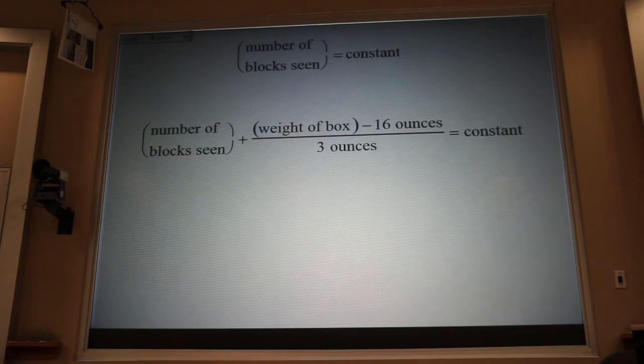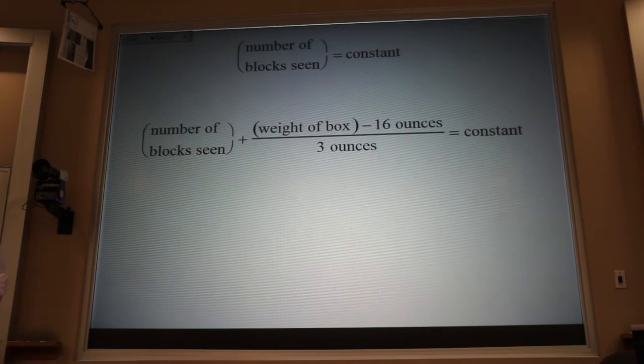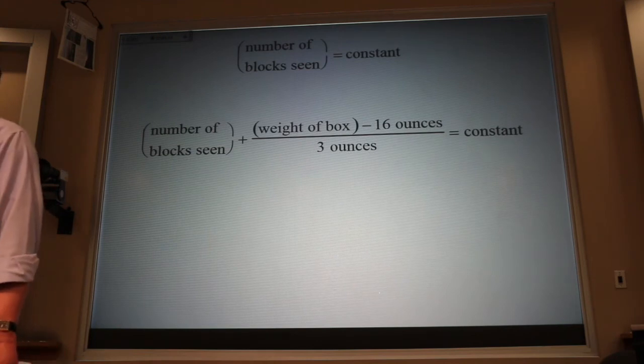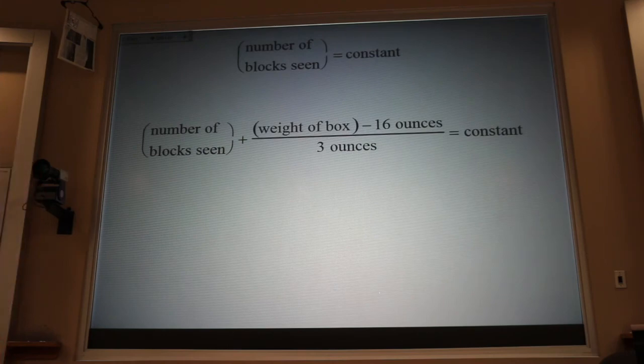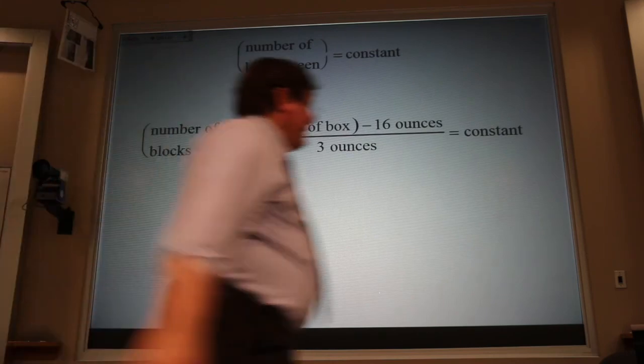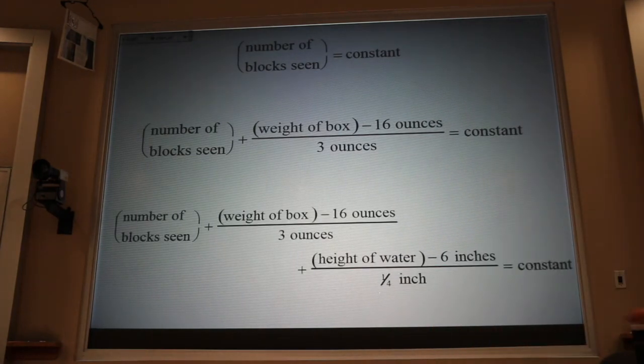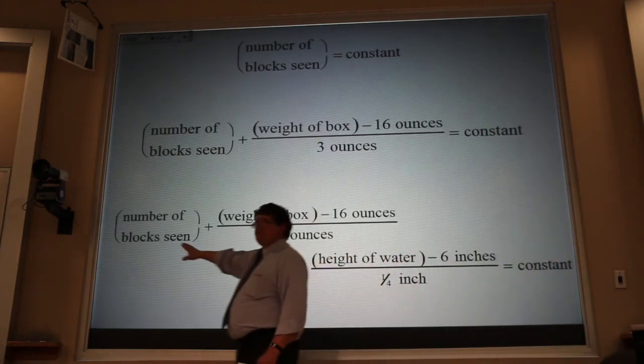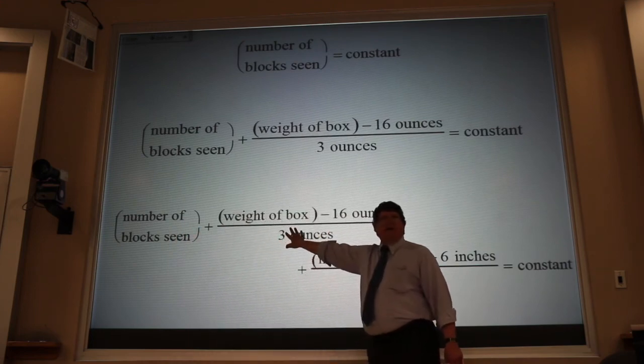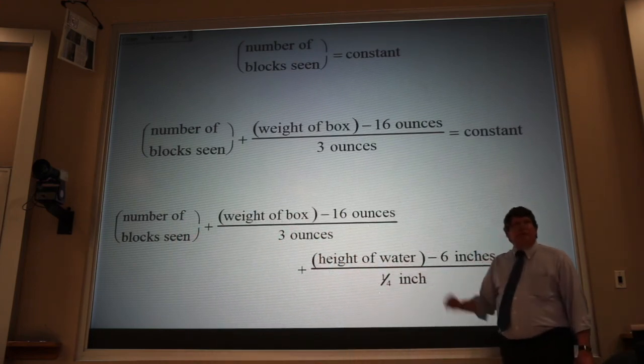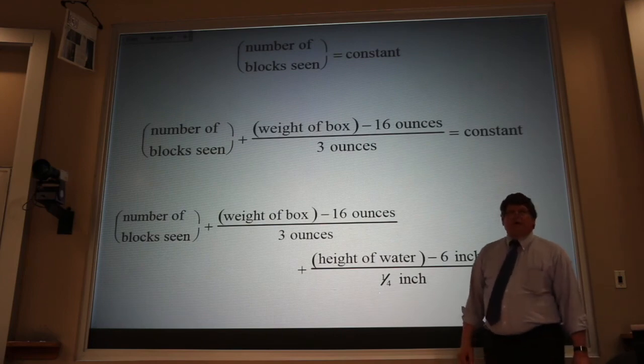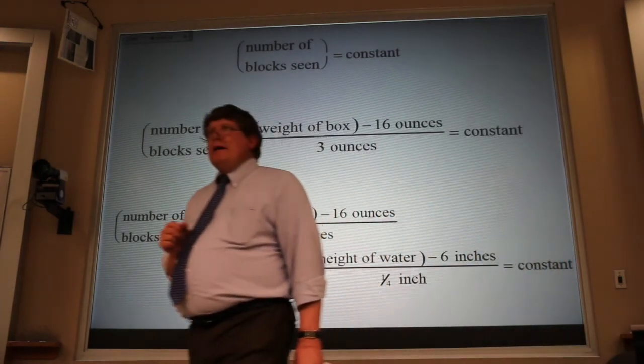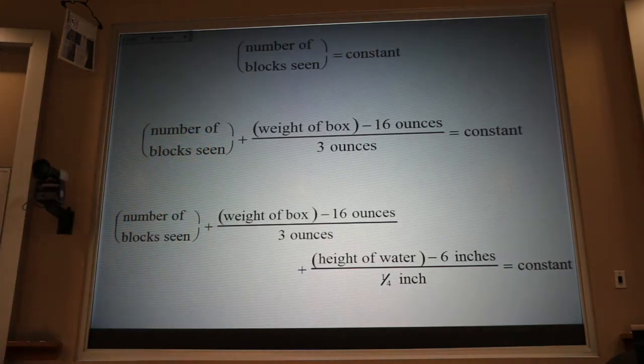And then she notices that the bathtub has dirty water, so dirty you can't even see blocks that are submerged. So she waits until she can count all the blocks. She takes one block, and she drops it into the dirty water. She sees that the level of the water raises from six inches to six and a quarter inches. And then she revises her equation. This is the number of blocks she can see on the floor. This is the number of blocks that are hidden in the toy box. And these are the number of blocks that are hidden in the dirty water.